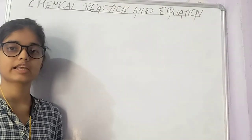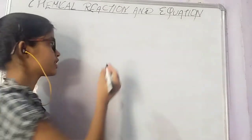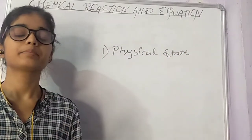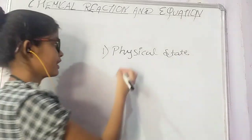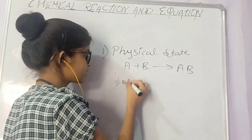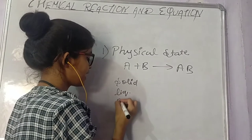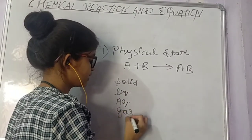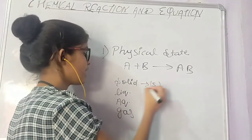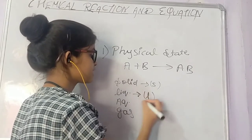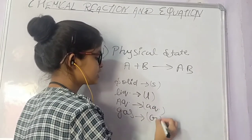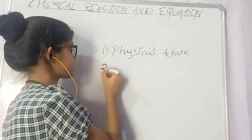To make equations more informative, we need to apply some rules. We should indicate the physical state of each substance in the equation. If a substance is in solid state, we represent it as (s). If it is in liquid state, we represent it as (l). If it is in aqueous form, we represent it as (aq). If it is in gas form, we represent it as (g). The second piece of information we provide is heat changes.